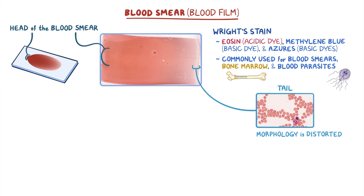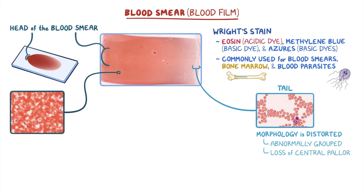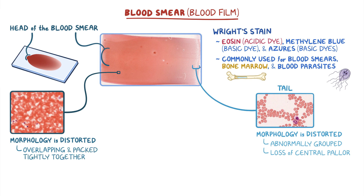The tail of the smear is not used for examination because the morphology of the cells can appear distorted. The cells are often abnormally grouped together, and red blood cells will have a loss of central pallor, which could be mistaken for spherocytosis. If we take a closer look at the blood smear on the left side, there are a lot more cells, but their morphology is also distorted. In this image, we can see that the cells are overlapping and packed so tightly together that it's hard to differentiate the individual cells from each other.